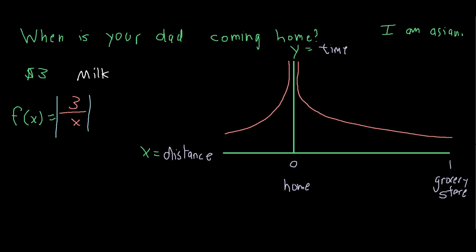In order to find out when your dad arrives home, we must take the limit as x goes to 0 of the function f of x. Actually, let's switch to a different color here.